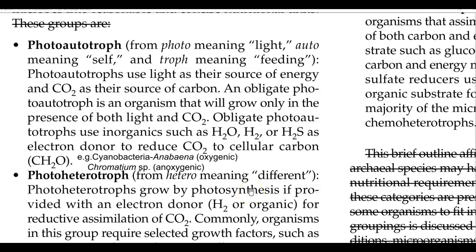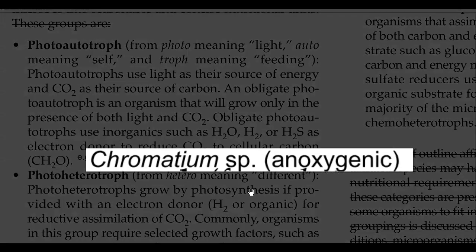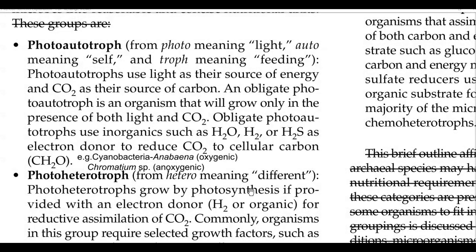Another example of a photo-autotroph is Chromatium, also referred to as purple sulfur bacteria — colorful purple sulfur bacteria in which hydrogen sulfide serves as the electron donor molecule. As a result, oxygen is not evolved, so this organism is a typical example of an anoxygenic group of photosynthetic organisms.